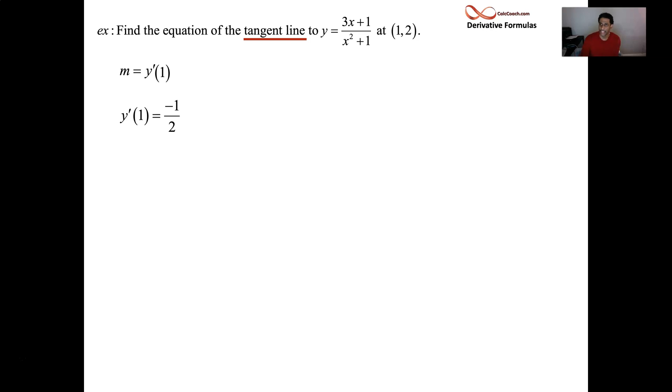If you want to see it, I'll put the link in the description below, or at the end of the video, I'll put a link to go back to that video. But yeah, negative 1 half. All right, so we have to find the equation of the tangent line. Well, we have the slope of the tangent line. How do we get the equation of the tangent line?